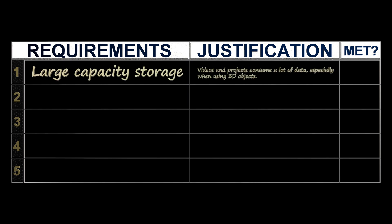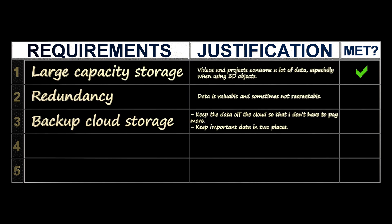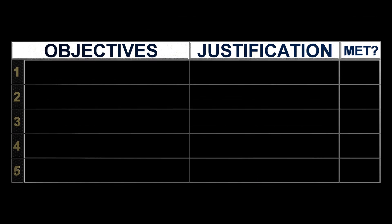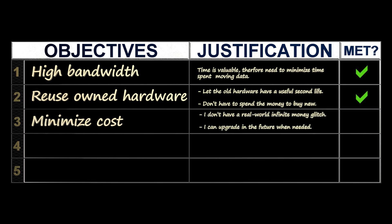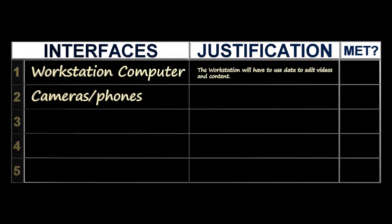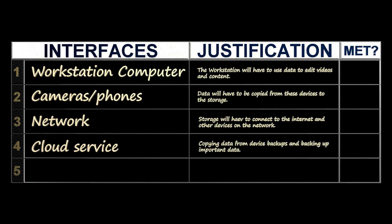Now let's look at the requirements, objectives, and interfaces we created at the beginning of the video. Large capacity storage? Met. Redundancy? Met. Backup cloud storage? Met. High speed — we got 10GB? Met. Reused own hardware? Met. Minimized cost? Definitely met, though there could be an argument for a lower-end CPU — but reusing all other hardware lets us check this off. As for interfaces, we can now connect to all items on the list: workstation computer, cameras and phones, network, and cloud service via Google Drive.